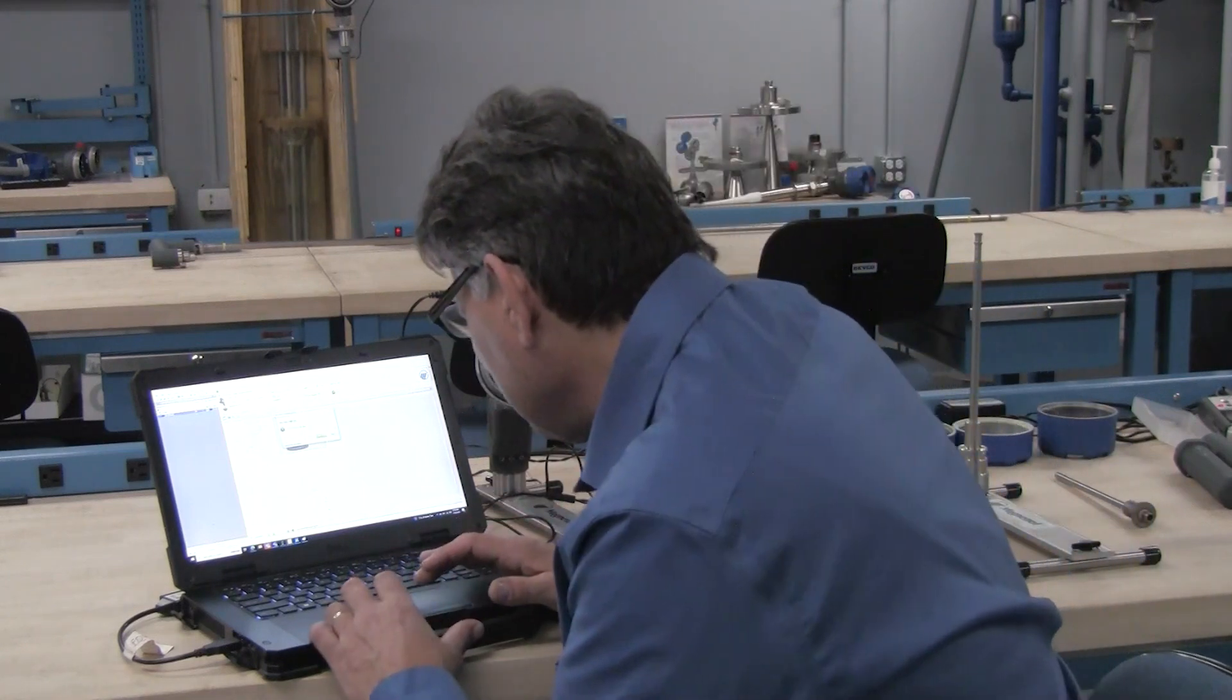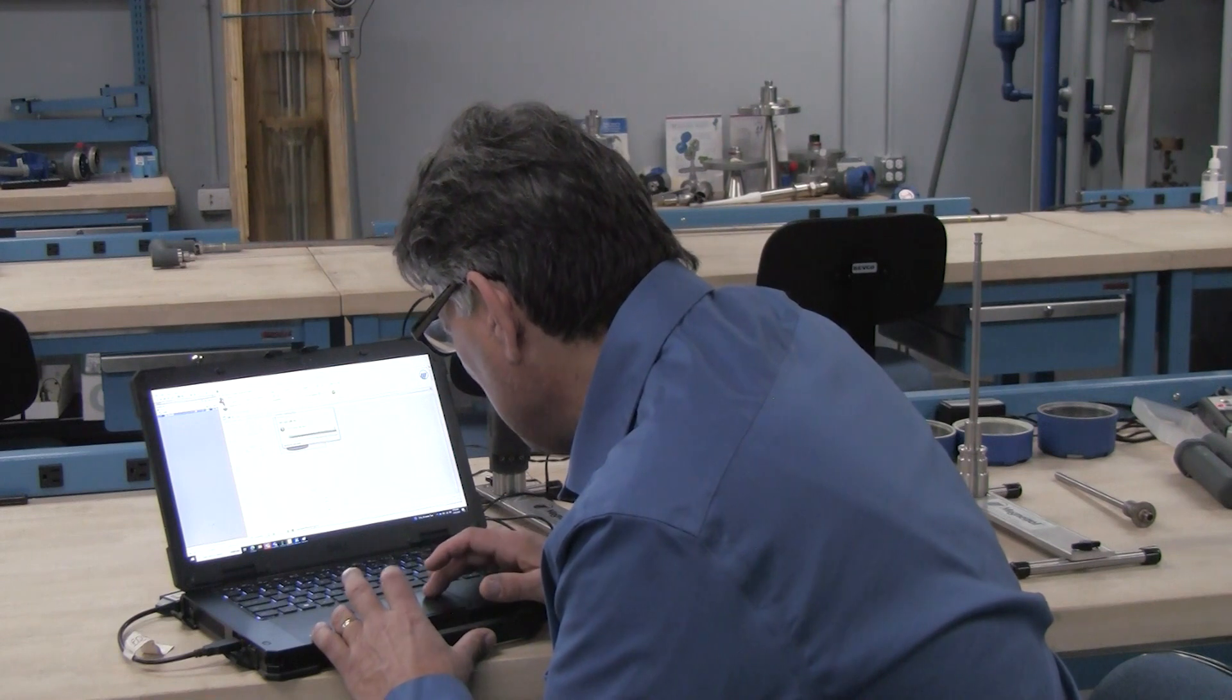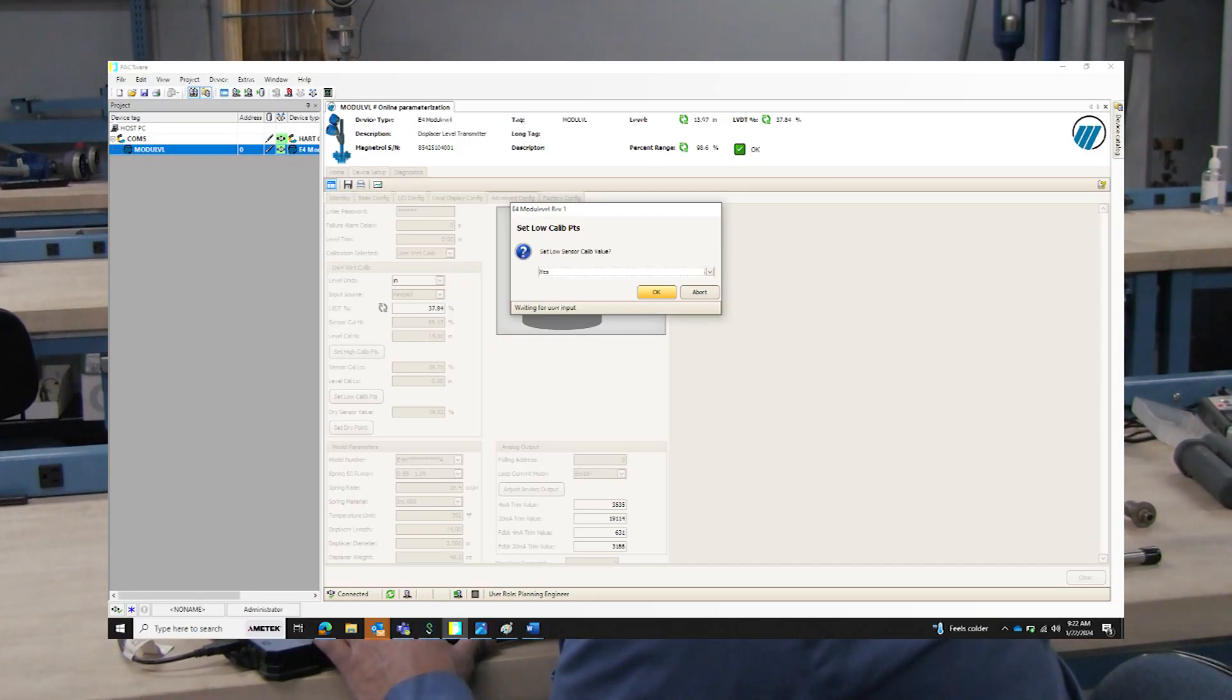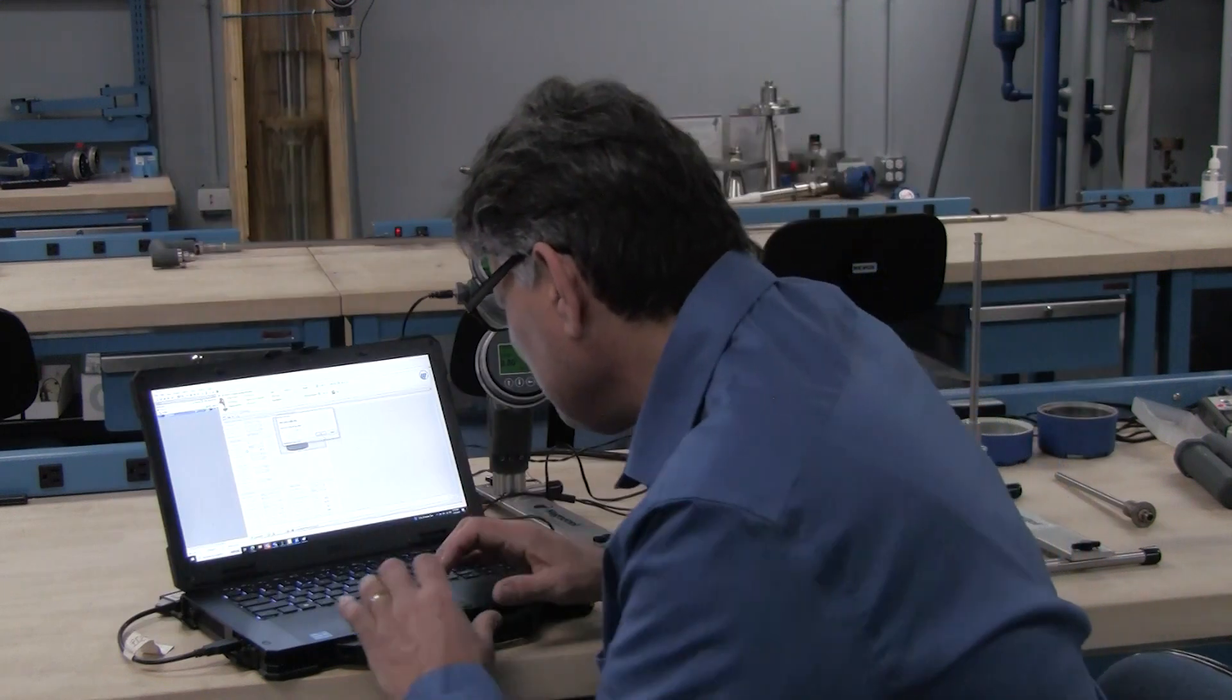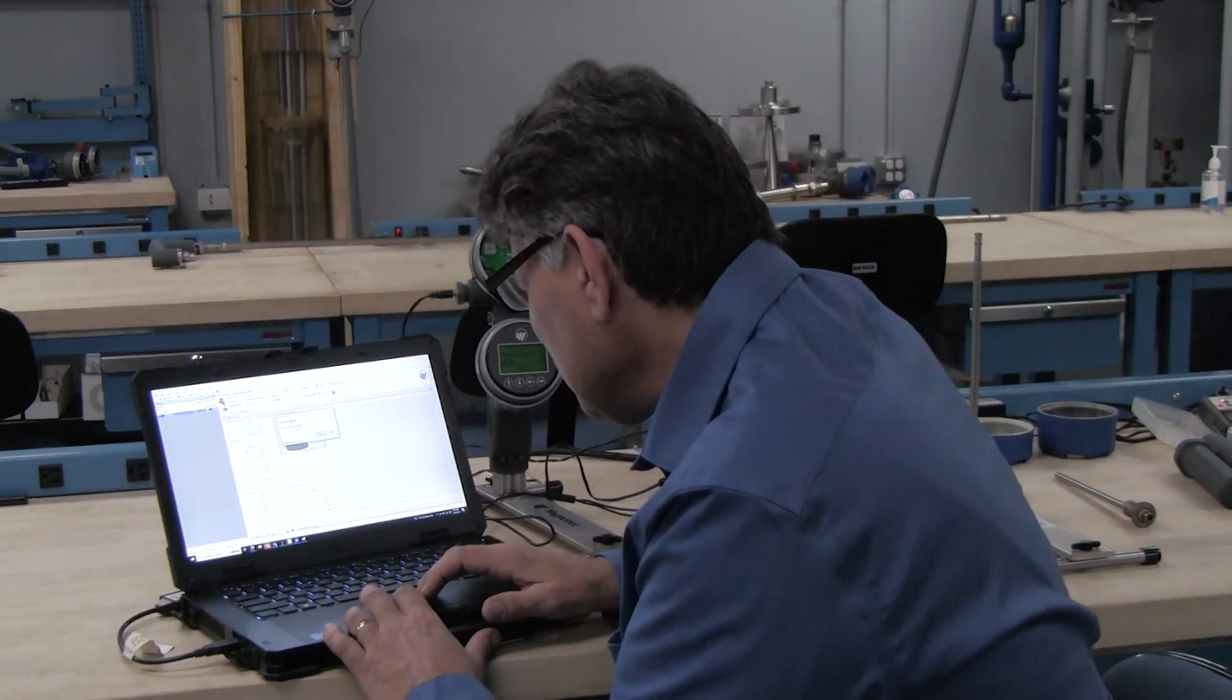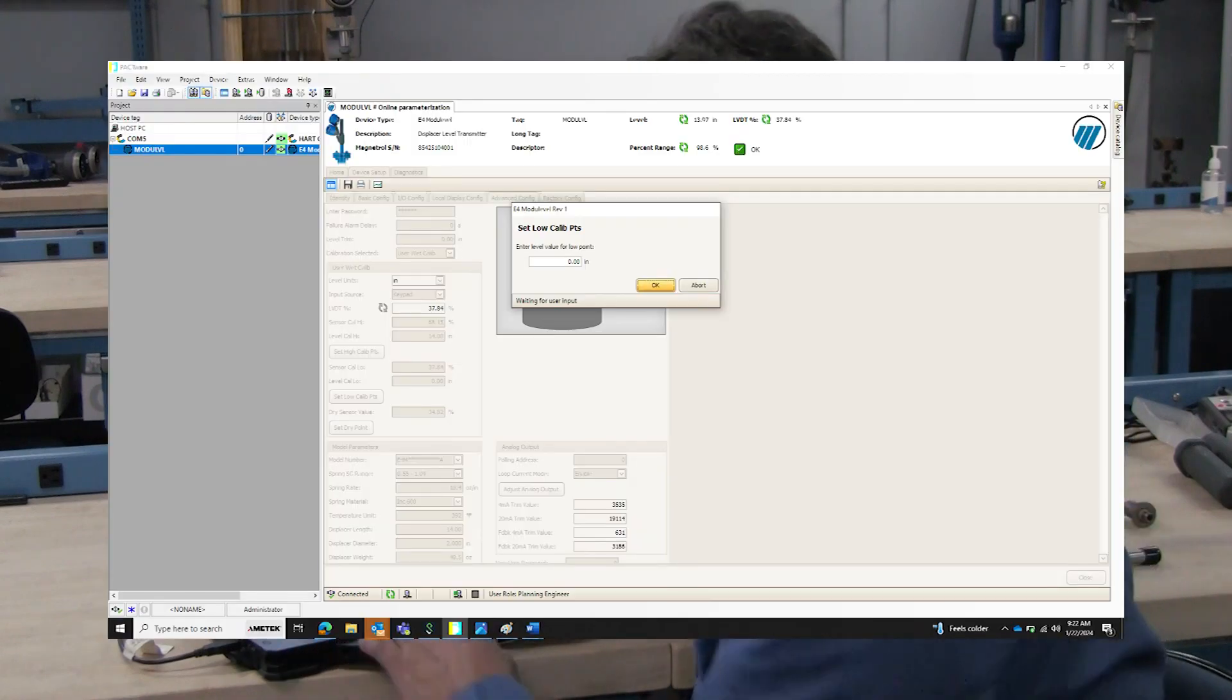So now that it's done that, it's going to ask me one more question. I'm going to set that to yes. And okay. Now it's going to ask me to put in the level I want to associate with that. So I'm going to call that zero inches. Now I've entered my low point.